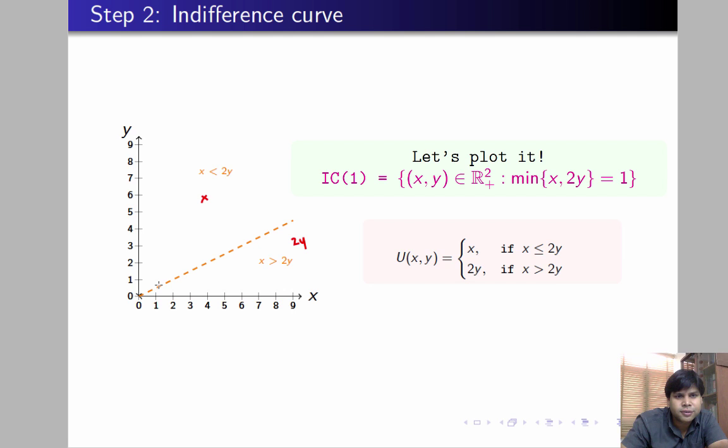If you want to plot the indifference curve, we're going to plot x equal to 1 in this region, which is going to look like this. And we're going to plot 2y equal to 1, which is y equal to half, in the region below the dashed line. The IC, if you want to complete it, is going to look like this.